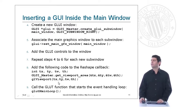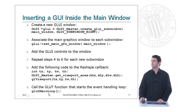Finally, you have to add this code to the reshape callback, and again add a call to the GLUT main loop inside of the main program.